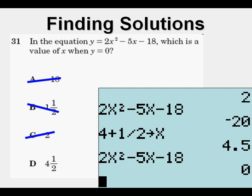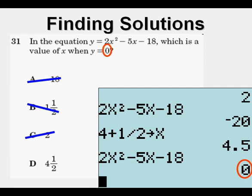I eliminated choices A, B, and C. For choice D, I entered 4 and a half and stored that to x, then entered 2x² - 5x - 18 and found it equal to zero. So D is the correct answer — hope you got that right!